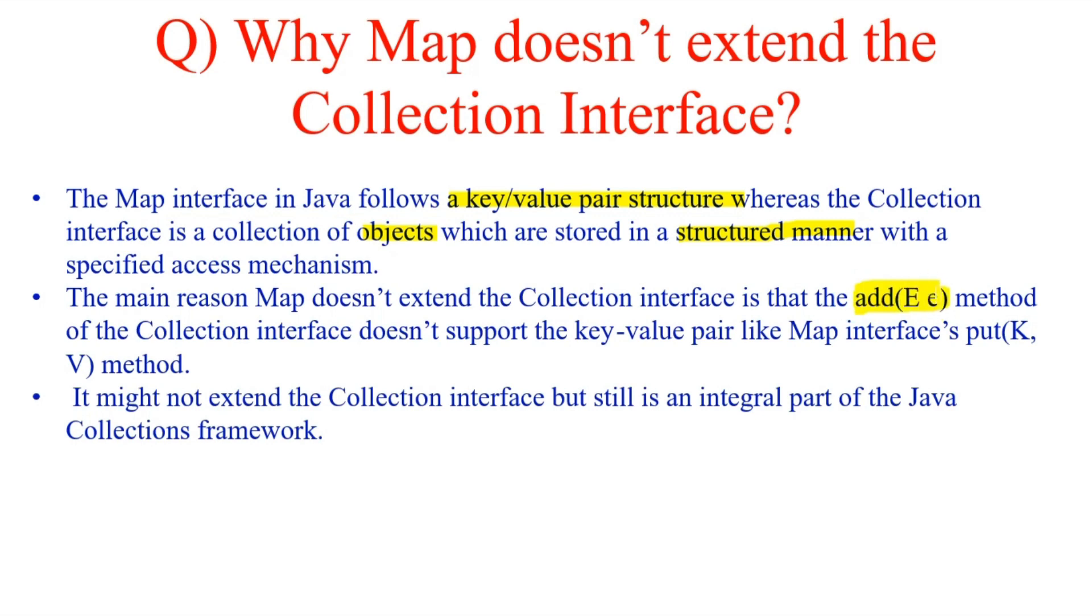But the Collection interface which is Map does not support just one element but also supports the key-value pair. So it's like put(K, V), which is key and value both. Hence it cannot extend the Collection interface.